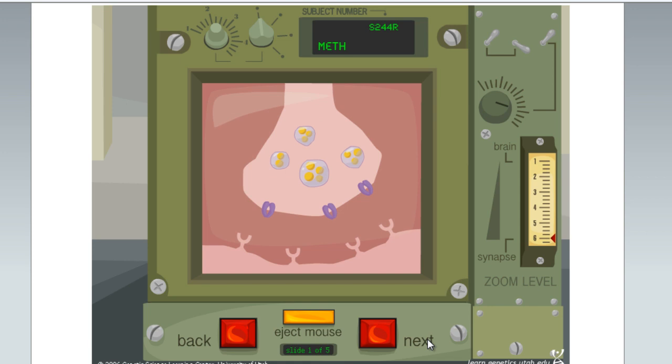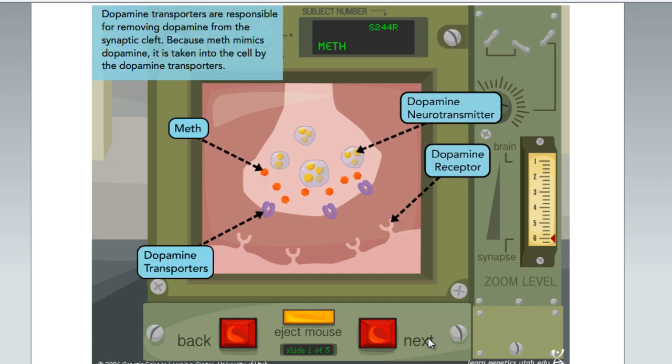Dopamine transporters are responsible for removing dopamine from the synaptic cleft. Because meth mimics dopamine, it is taken into the cell by the dopamine transporters.